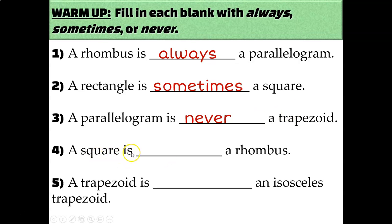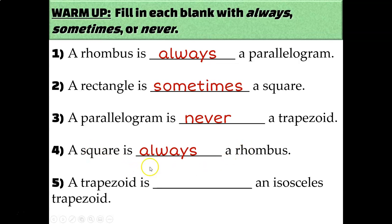A square is always a rhombus. A square has four congruent sides and four congruent angles, and a rhombus has four congruent sides, so that square will always be a rhombus. But it doesn't work the other way — a rhombus isn't always a square because a rhombus only has four congruent sides and doesn't necessarily have four congruent angles. So the order of the question is really important: a square is always a rhombus, but a rhombus is sometimes a square.